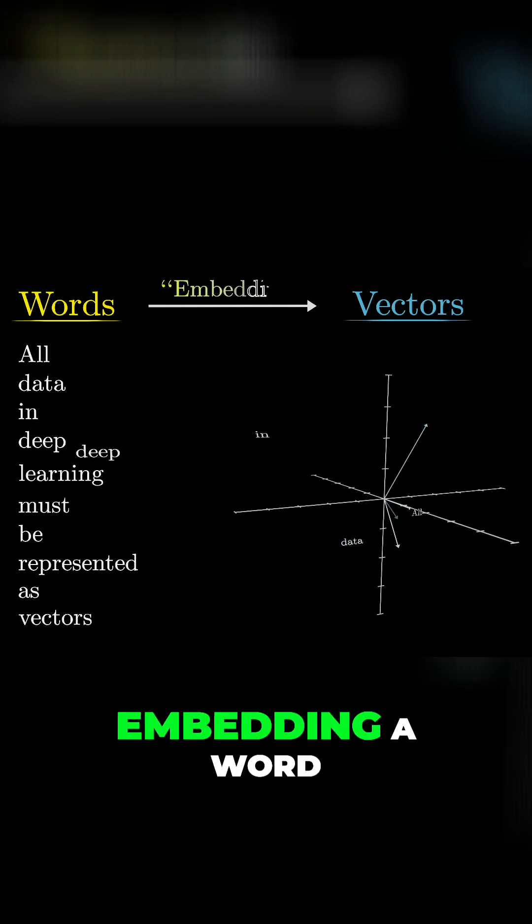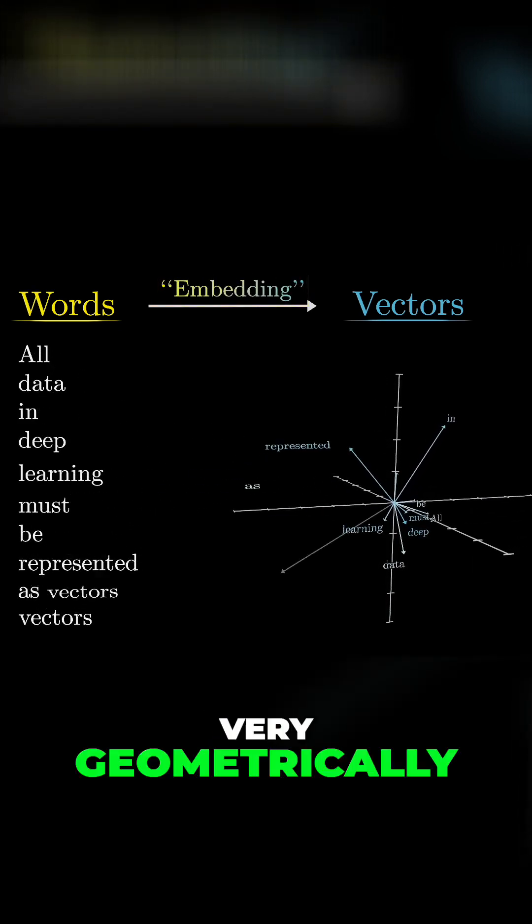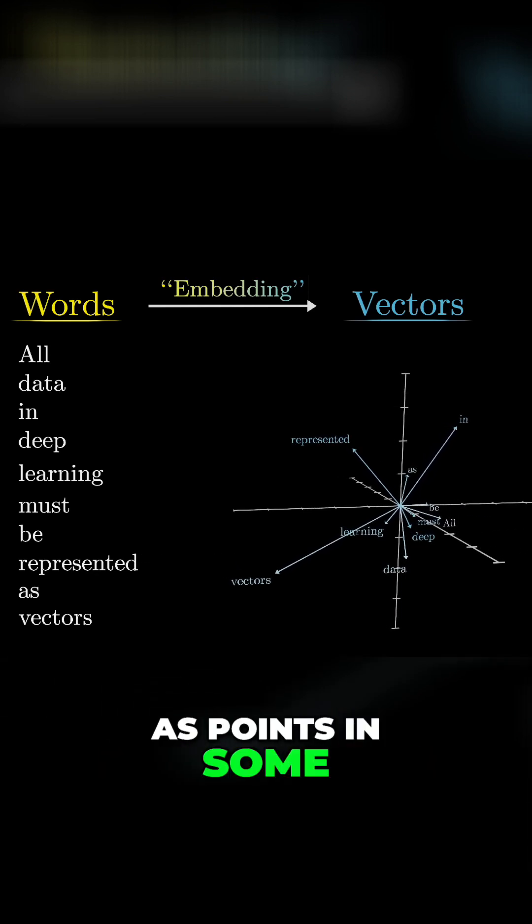We often call this embedding a word, which invites you to think of these vectors very geometrically, as points in some high-dimensional space.